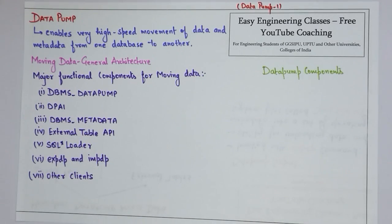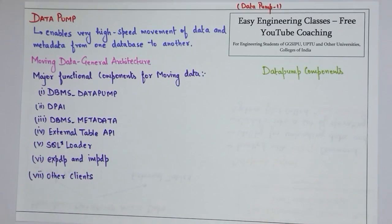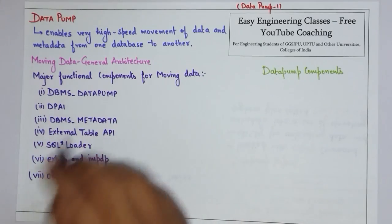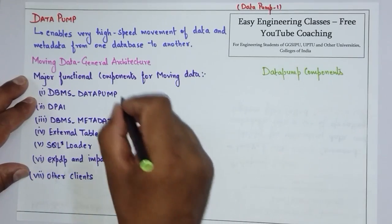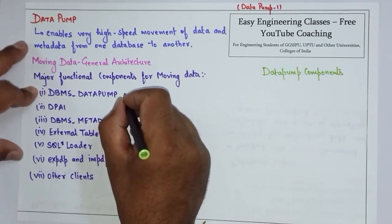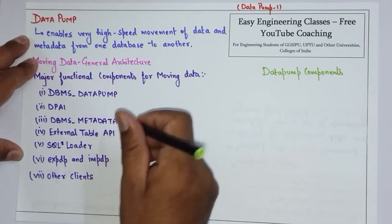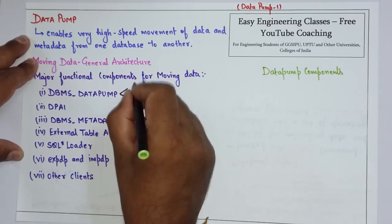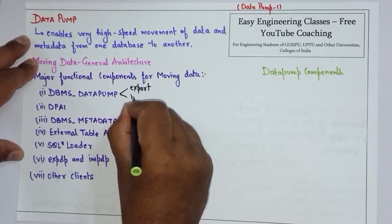Let's look at the architecture for moving data. There are some functional components for moving data. The first is DBMS_DATAPUMP. DBMS_DATAPUMP contains the API for high speed export and import — this API is used for the export utility and import utility.